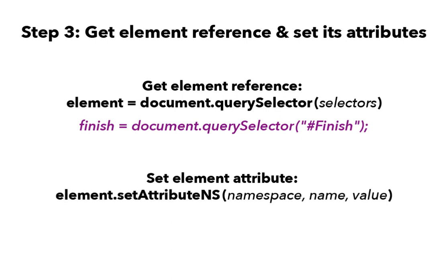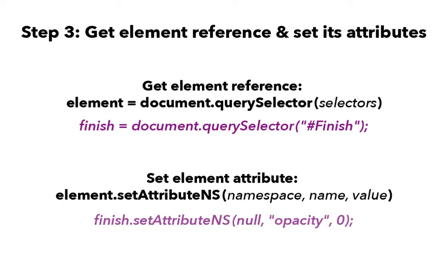Once we have a reference to an element's identifier, we can set any of the attributes it possesses. The best function to do this is setAttributeNS. This syntax is required to act on SVGs, which are essentially XML files. For our purposes, the first element property we want set is opacity, which we will want set to zero when the scene first loads. Three parameters need to be passed to this function: the NS or namespace can be set to null because it isn't being used here; the second parameter is opacity, the one being changed; and the final parameter is the value we want to set, which is zero in this case. With that taken care of, we need to address where this code should be placed.